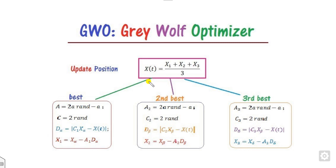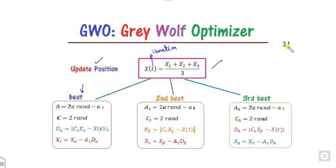What they proposed is that in order to update the position, you use this equation where x(t) represents the current position. You can update the solution with the formula (x1 + x2 + x3) / 3, where x1 is the best, x2 is the second best, and x3 is the third best. For example, if my function values are 31, 33, 29, 53, and so on, and my problem is minimization.